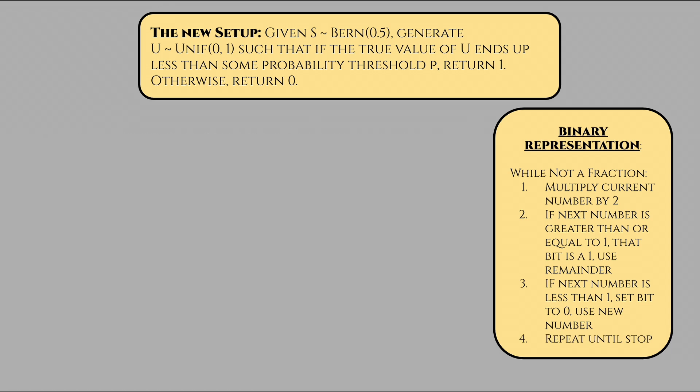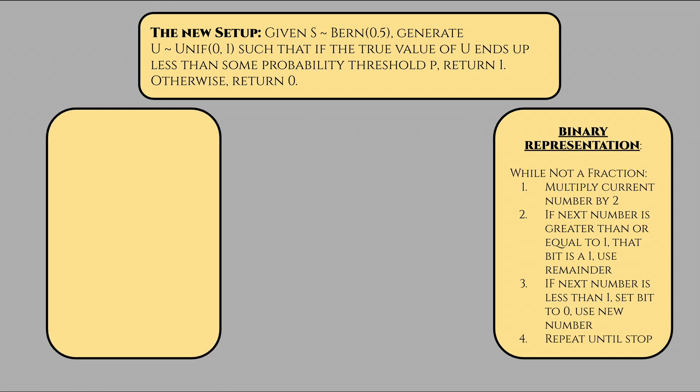For our two examples, we can see how this algorithm plays out. For 1 over 4, step 1, we have 0.25 times 2 equals 0.5, which is less than 1, so we set the first bit to 0. Step 2, then we have 0.5 times 2, which is equal to 1, which is greater than or equal to 1, so we add the second bit to 1. Step 3, the remainder of 1 divided by 1 is 0, so we end our expression to get 0.01.